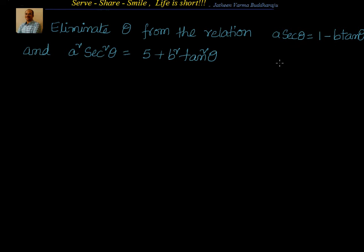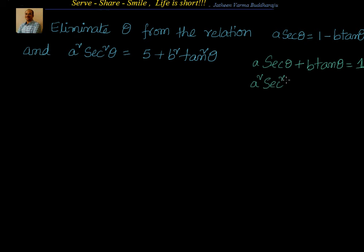To solve this problem, let's rewrite the first equation: a secant theta equal to 1 minus b tan theta becomes a secant theta plus b tan theta equal to 1. For the second equation, a square secant square theta equal to 5 plus b square tan square theta, bringing b square tan square theta to the left gives a square secant square theta minus b square tan square theta equal to 5. Notice the first equation is in the form a plus b equal to 1, and the second is a square minus b square equal to 5, where a equals a secant theta and b equals b tan theta.